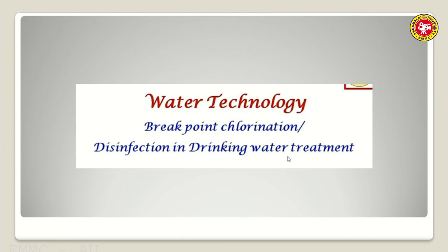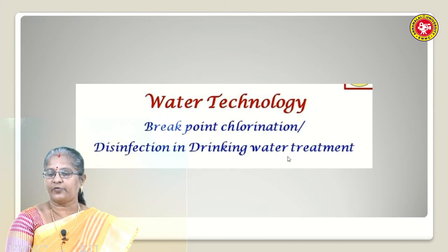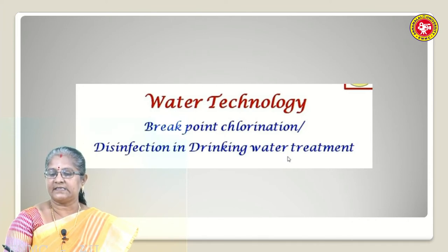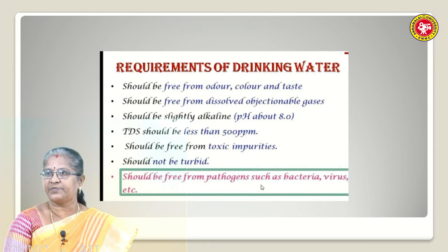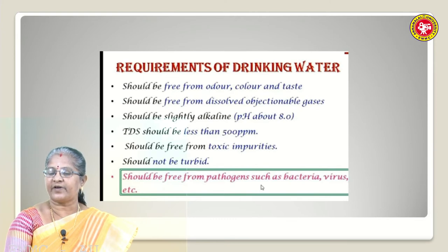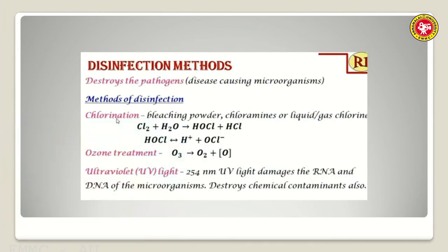Next comes disinfection. So far we have seen hardness-producing salts in water causing problems for boilers and how to soften water using internal and external treatment. Now we address pathogenic bacteria present in water which affect our health. Requirements for drinking water: it should be free from odour, colour, and taste; free from dissolved objectionable gases; slightly alkaline (pH around 8.0); free from pathogens like bacteria and viruses; and not toxic or turbid. Disinfection means the removal or killing of pathogenic bacteria.